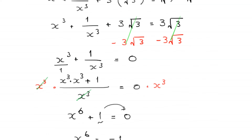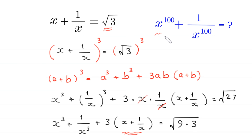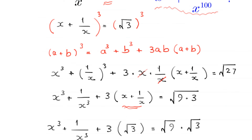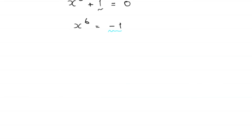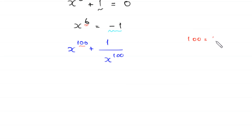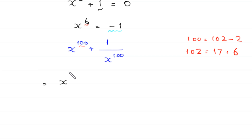Now we find the value of x to the power 100 plus 1 over x to the power 100. Because we have the sixth power of x, we make 100 a multiple of 6. So 100 can be written as 102 minus 2, and 102 equals 17 times 6. So this expression can be written as x to the power 102 minus 2, plus 1 divided by x to the power 102 minus 2.